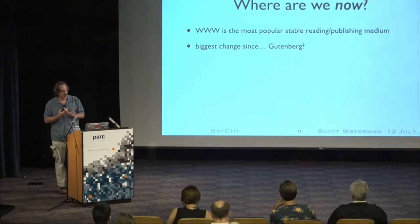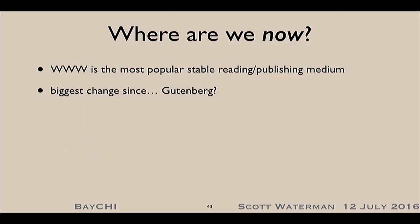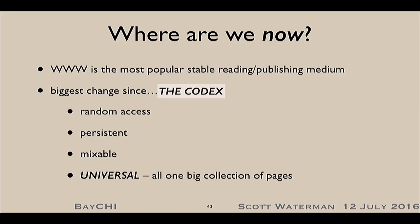The World Wide Web is really the most stable platform for understanding and distributing text. Some people say it's the biggest change since Gutenberg. I'd say it's at least the biggest change since the codex, and it might be the biggest change since phonetic writing. What we've got now is this giant interconnected system of text that's truly random access — you can get to anywhere. It's persistent, mixable and remixable, and universal in the sense that it's all one giant collection where any piece can point to any piece. The big introduction is one piece of metadata we didn't have before: the link.